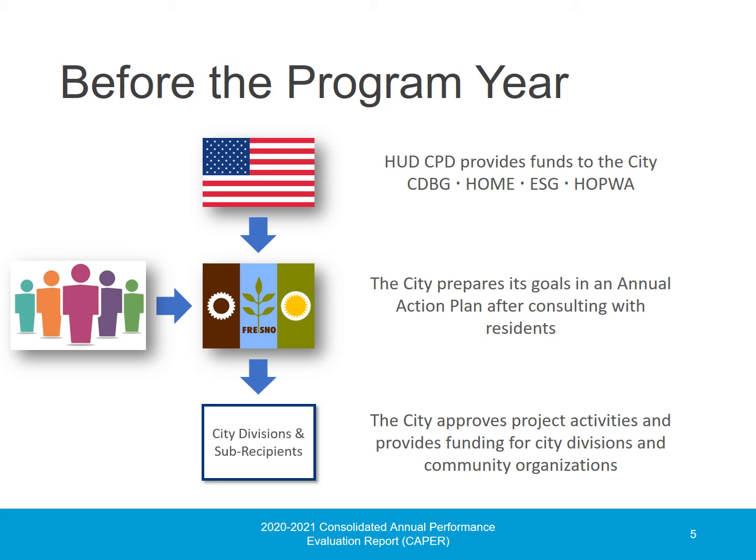The City prepares its goals in an annual action plan in consultation with residents regarding the most critical needs in the community. The annual action plan also needs to be consistent with the goals and priorities that the City adopted through a five-year consolidated plan. Once the annual action plan is approved by the City Council and submitted to HUD, the City implements the projects, programs, and activities in the plan by either providing funding and technical assistance to City divisions or to non-profits and organization sub-recipients, which are awarded funding after an application process.